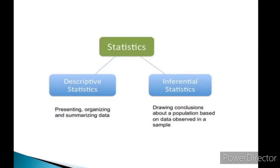Statistics has been categorized in two parts. First is descriptive statistics and second is inferential statistics. Descriptive statistics involves the kind of analysis where you collect, organize, and simply present and summarize the data. Inferential statistics, on the other hand — inference means to conclude. Whatever data you have observed in samples, you have to draw conclusions from it.